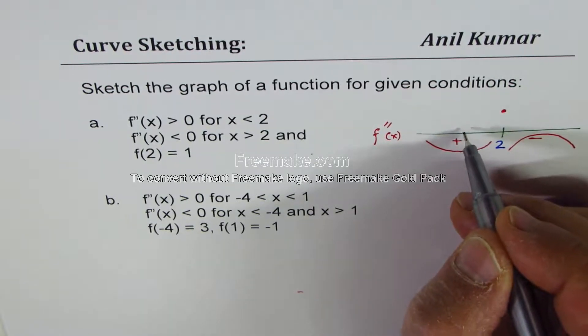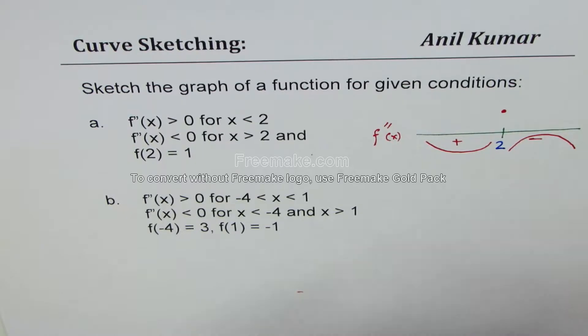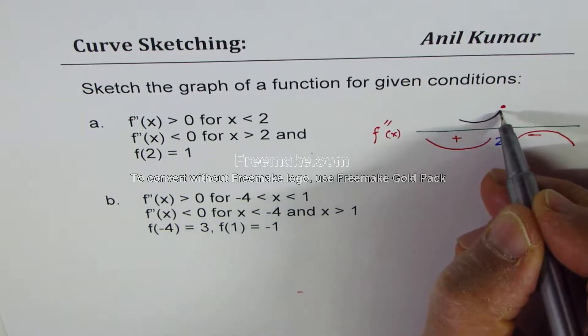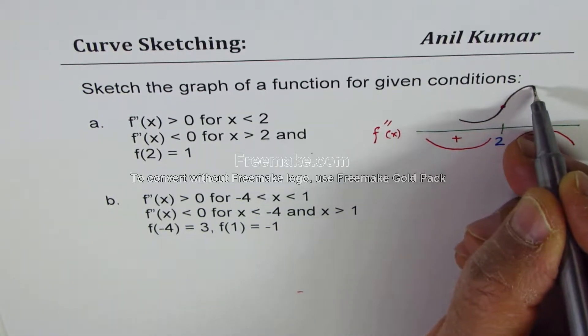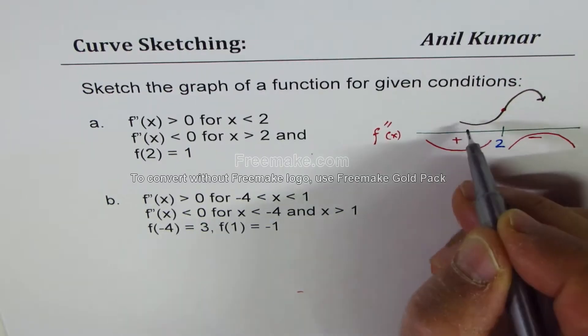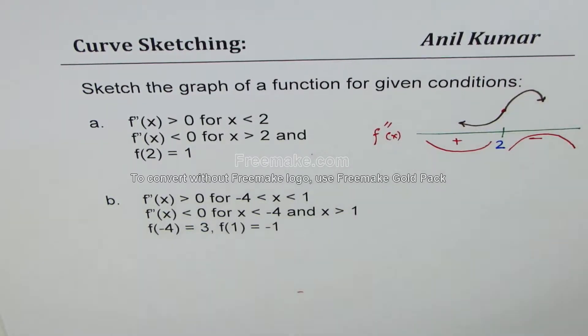So if I have to draw a graph which is concave up here and down thereafter, the graph should look like what? Very simple, right? So it should be kind of like this, point of inflection and this. So that becomes the graph of the function.